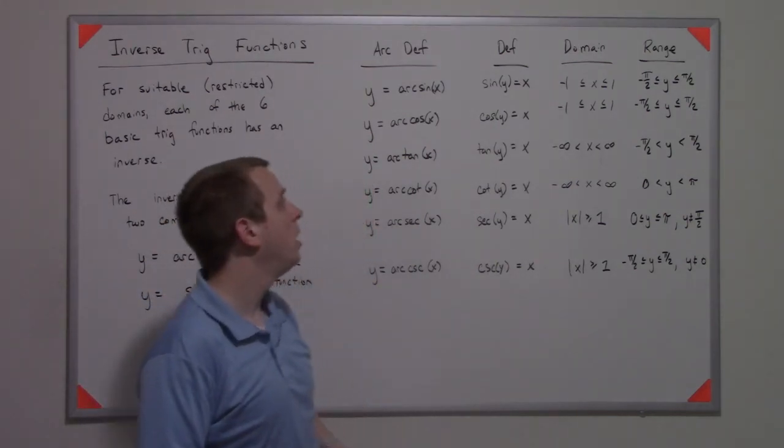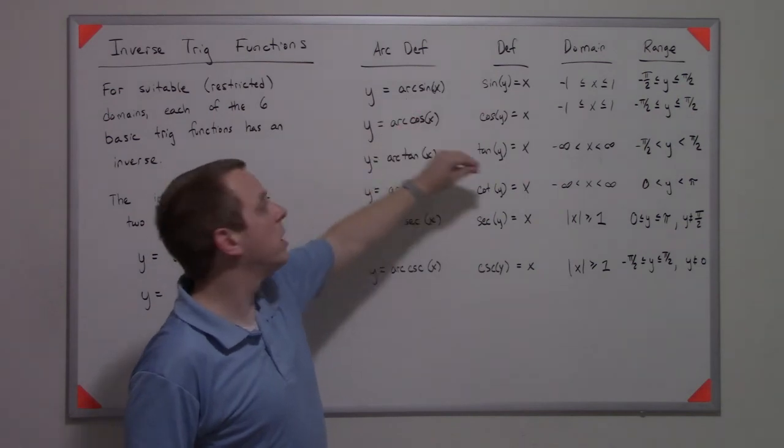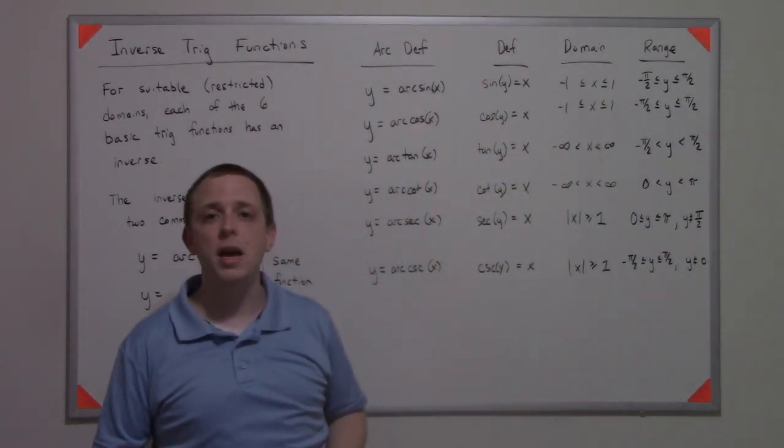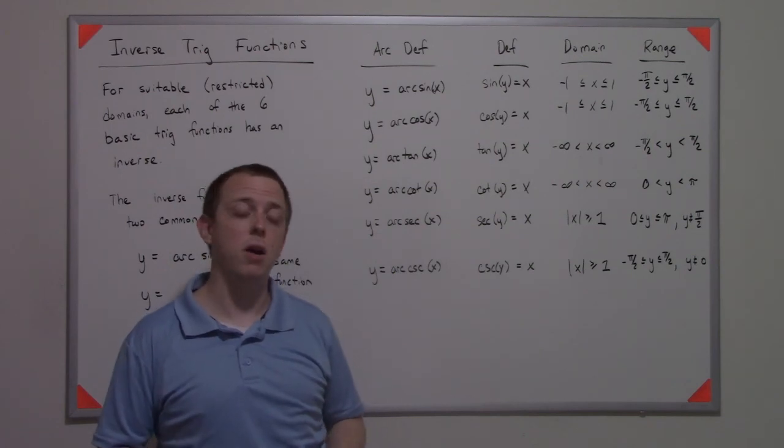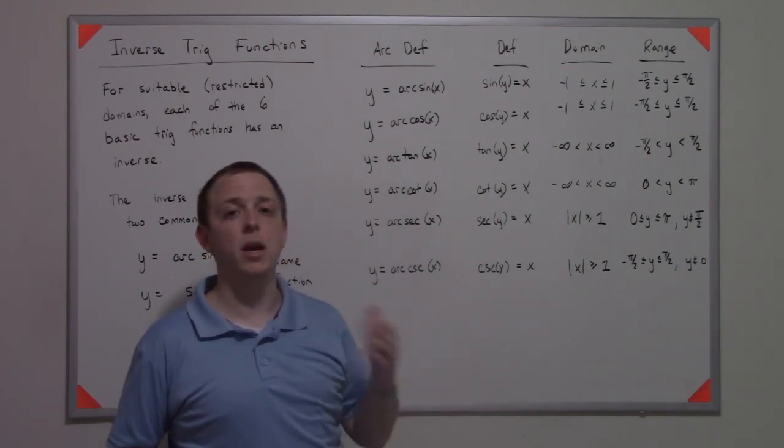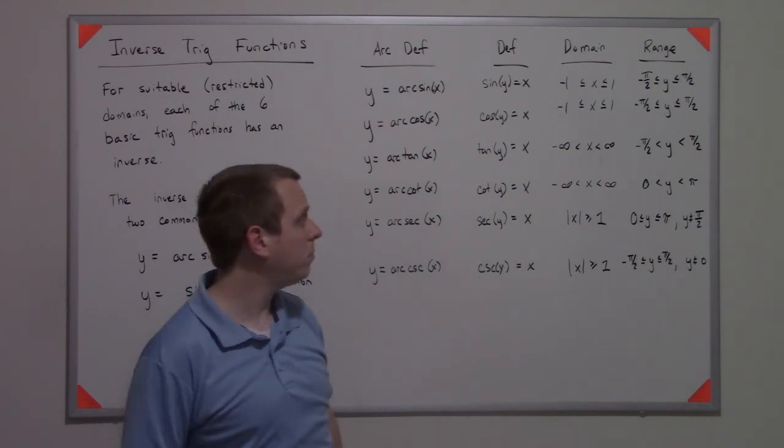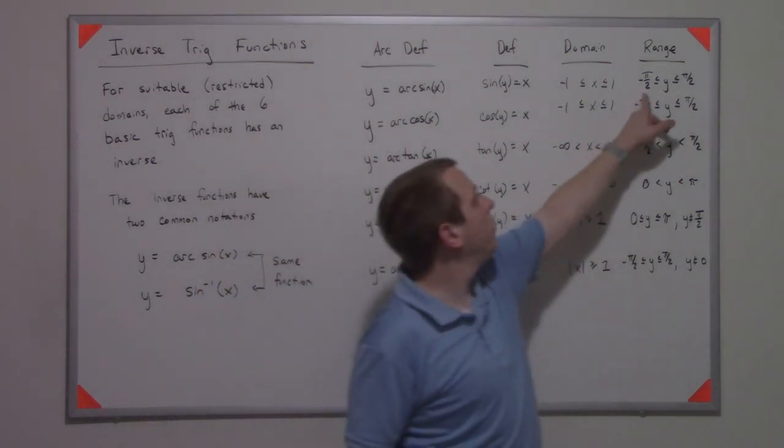The domain of the arcsine function is negative one to one. So you can't take arcsine of two. You can take arcsine of negative one, you can take arcsine of positive one, but you can't take arcsine of ten.